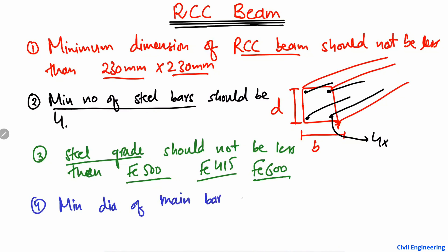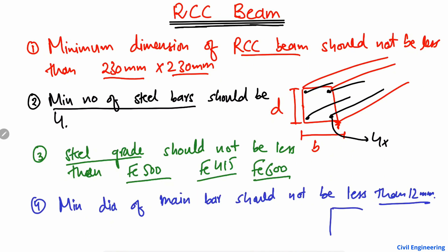The fourth point is that the minimum diameter of the main tensile reinforcement bars should not be less than 12 millimeters. In the cross-section, the main bars are provided at the bottom to take the tensile stresses, and the diameter of those bars should be at least 12 mm — it should not be less than this value for your RCC beam design.